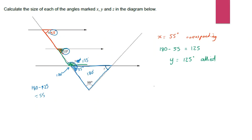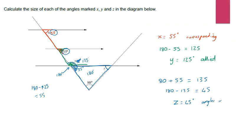Now in the triangle I've got 80 degrees and 55 degrees. Adding those together gives 135 degrees. Subtracting 135 from 180 leaves me with 45. So Z is equal to 45 degrees, and the reason is because angles in a triangle sum to 180 degrees. By writing down our reasons, it's very helpful that we understand how we solve these problems.